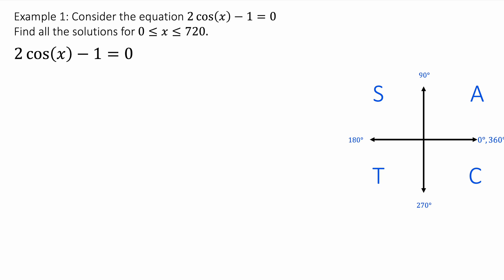Let's see an example of how we can use this properly. Consider the equation 2cos(x) - 1 = 0. Find all solutions for 0 ≤ x ≤ 720. Now, 720 is twice 360, so we're going to have to go around the entire CAST diagram twice to do two full laps of 360.